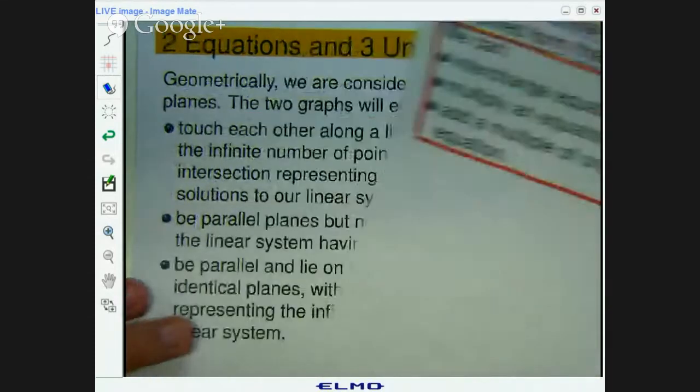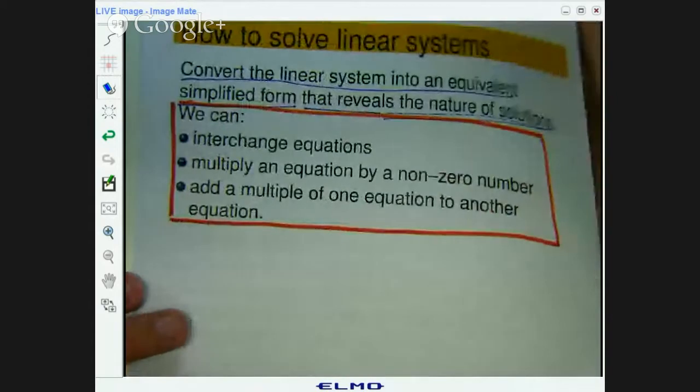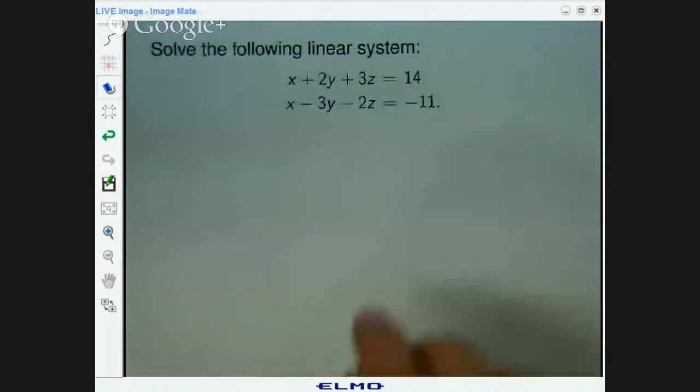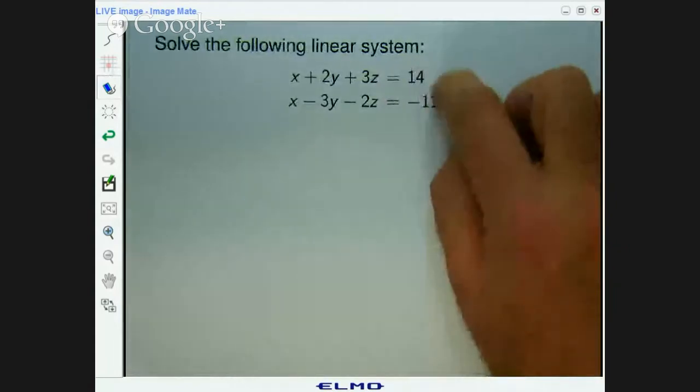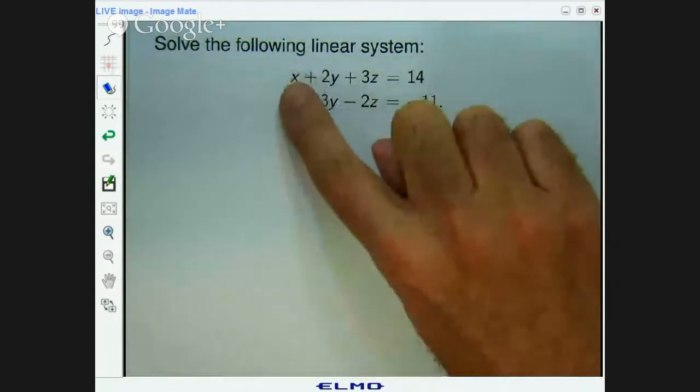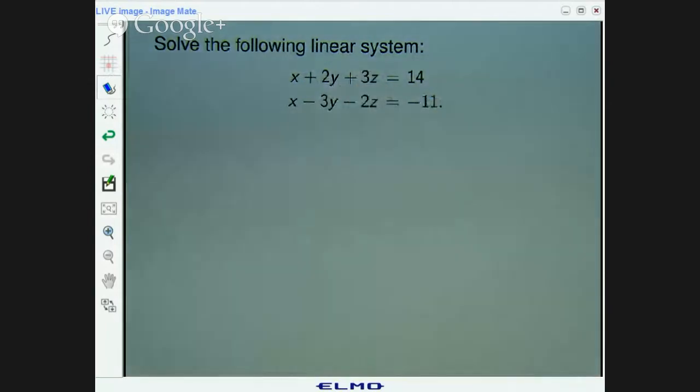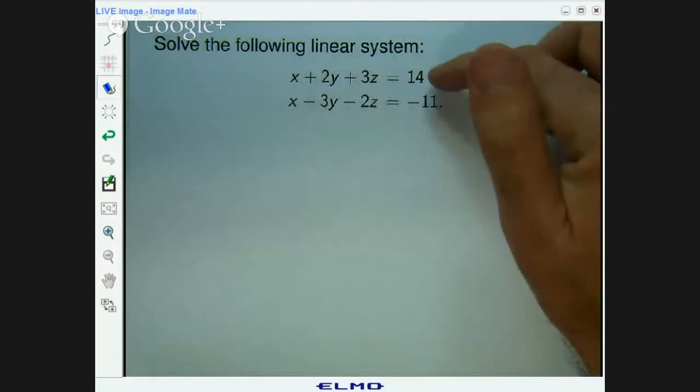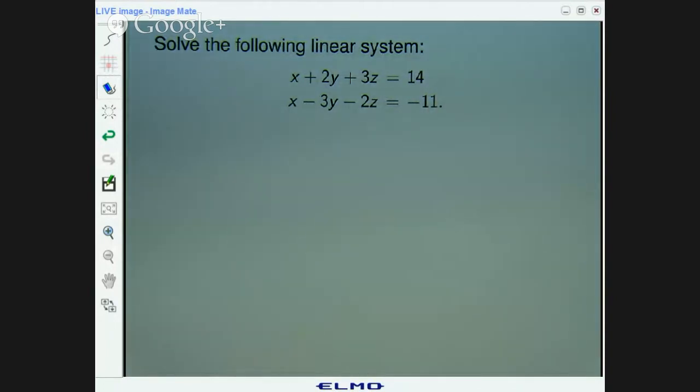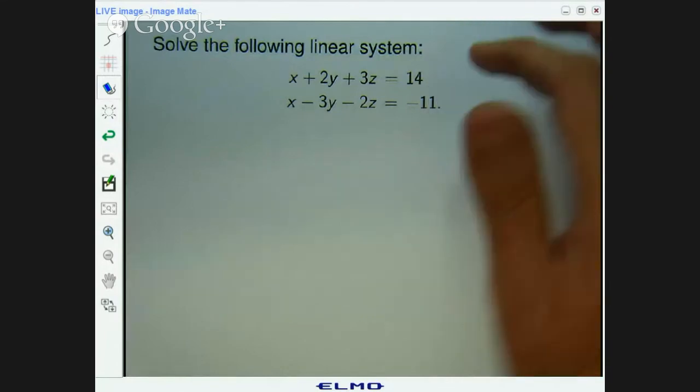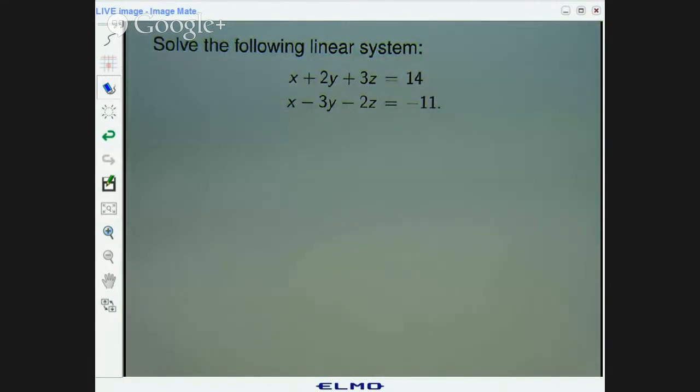So what's the example I'm going to look at today? This is an example of two equations, three unknowns. So the variables or the unknowns are x, y, and z.